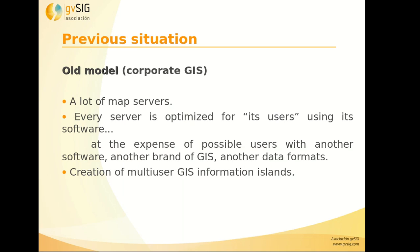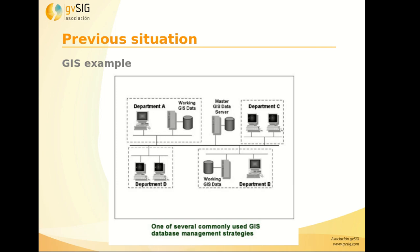Until now there was an old model, or corporate GIS, where there were a lot of map servers. Every server was optimized for the different users and there were GIS information islands. Most of the times the different departments of the same city council paid for the same service or same cartography. There were different departments that paid for the orthophoto, for example, of a municipality. There were different departments with their own cartography or GIS data, and only that department could access to that cartography. And sometimes there were some servers for all the departments.